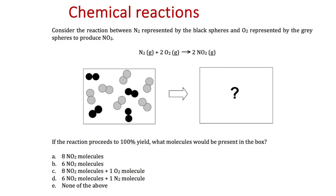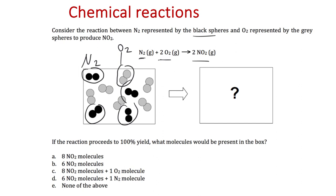Let's look at a picture-type question, like an old exam question. We have the reaction N₂ + 2O₂ → 2NO₂. N₂ is represented by black spheres and O₂ by gray spheres. In the box we're given a random collection: I count 4 N₂ molecules and 6 O₂ molecules.